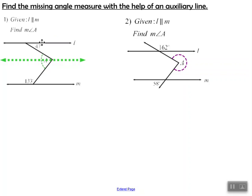Now let's look at this top half. When you look at these two parallel lines cut by this transversal, the angle of 47 degrees and this angle — part of the angle A we're looking for — these are alternate interior angles. The alternate interior angles theorem tells us that when we have two parallel lines, they are congruent. So this part of angle A is 47 degrees.